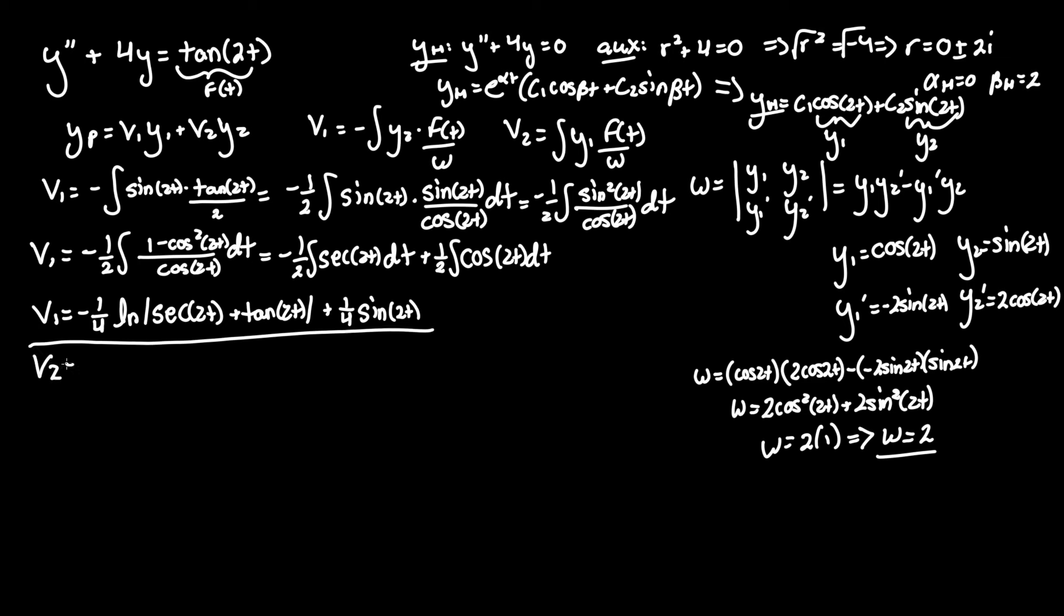For v2 integral of y1 which we had as cosine 2t times f of t tan of 2t over Wronskian of 2 dt and factoring out the one half and breaking down tan 2t once more we have cosine 2t times sine of 2t over cosine of 2t. And fortunately for us cosine cancels so we're left with a normal integral of one half times sine of 2t dt. So v2 equals negative one fourth cosine of 2t.